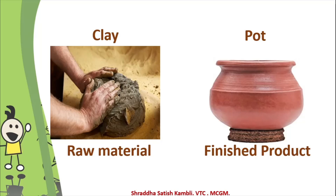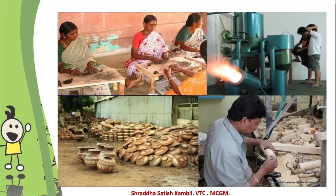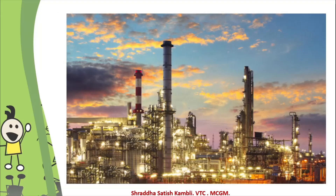Just like the potter makes pots, there are certain other small industries also which you will see around you — for example, those aunties making agarbatti or incense sticks, which you use when you do puja; someone making oil; someone making a belan for chapatis; pots and pans. If these kind of things are made at home only with small machines, then they are called as a cottage industry or a handicraft industry. And then you have some very big factories with huge machines and so many people working — these are not cottage industry, these are large scale industries.